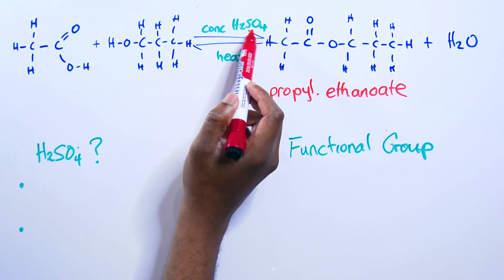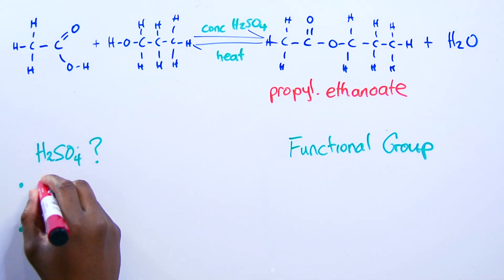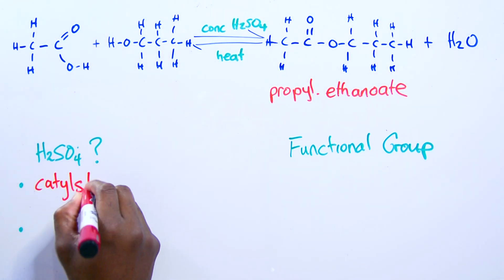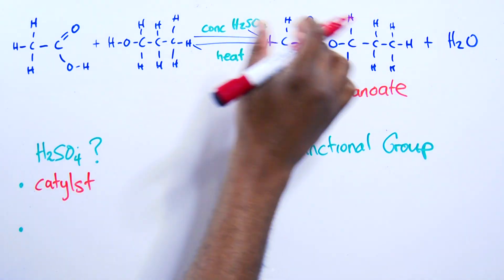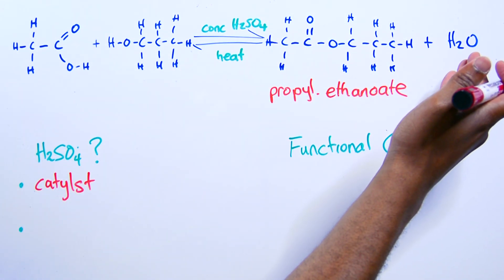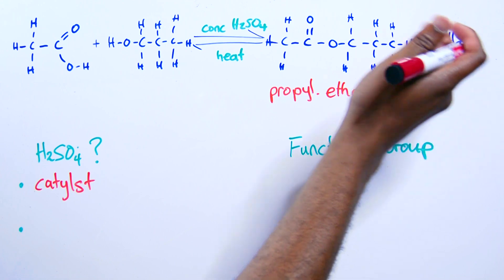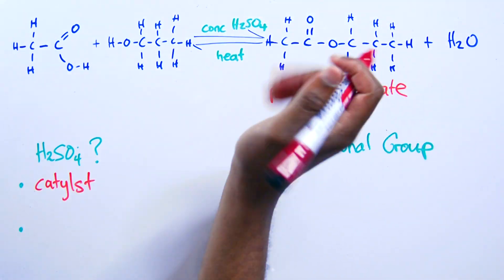If they ask you why do we have concentrated sulfuric acid, there are two reasons. One, it's a catalyst. Speeds up the reaction. The next one is that the concentrated sulfuric acid takes the water out of the situation. As soon as they make water, concentrated sulfuric acid eats that up.